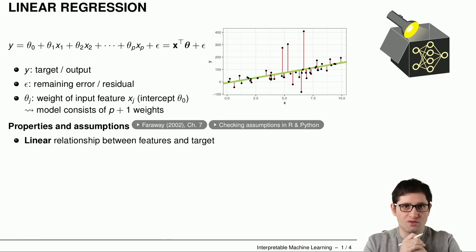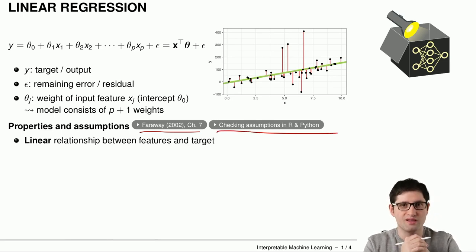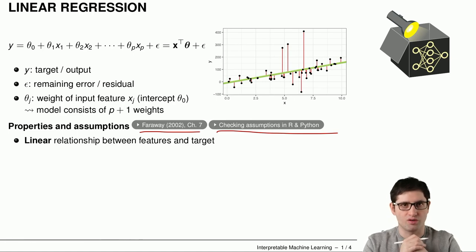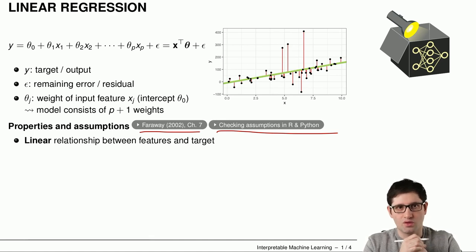A linear regression model has well-known properties and assumptions. We have linked a book and a blog post where you can check using R or Python whether the assumptions are valid for your use case. One key assumption is that the linear regression model assumes a linear relationship between the features and the target. If the relationship is not linear, then the linear regression model would not be a good choice.